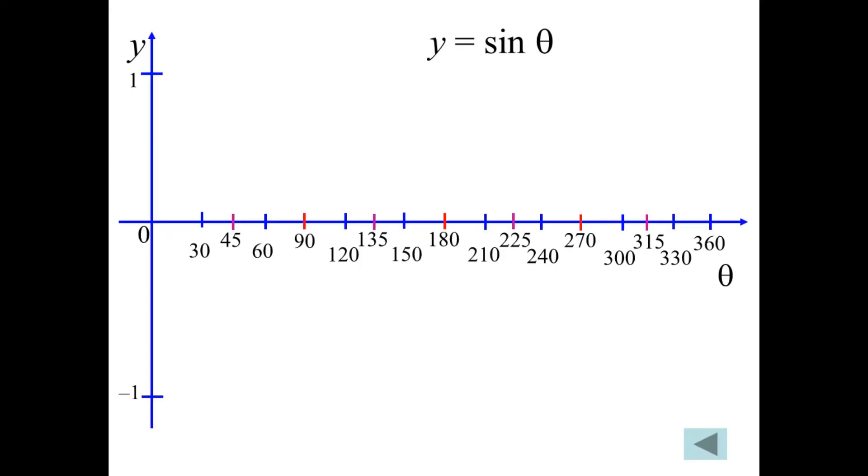If you took a table of values and evaluated the sine of theta, where theta was 30 and 45 and 60 and 90, you would get values that match the following points. So we could say the sine of 0 is 0, and so we would have that point, while the sine of 30 is a half, and we would have that point, and so on.